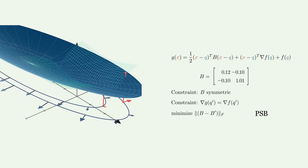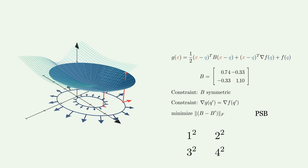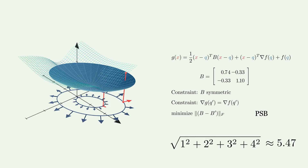Another possible constraint is that the difference is minimal according to the Frobenius norm. This leads to the so-called Powell Symmetric-Broyden (PSB) update. The Frobenius norm is a matrix norm computed by squaring every entry, adding each of them up, and then taking the square root of the result. However, this update has an important limitation: it does not guarantee that the resulting Hessian approximation is positive definite. As we previously saw, for the Newton algorithm it is important that the Hessian is positive definite.